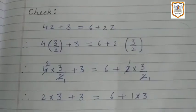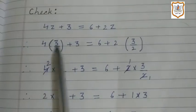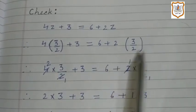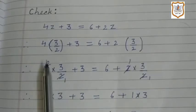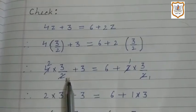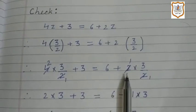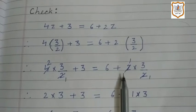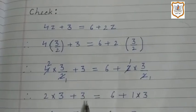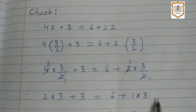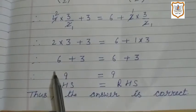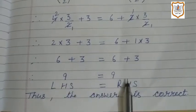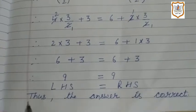Now we check our result by putting z = 3/2. So we write 4(3/2) + 3 = 6 + 2(3/2). Here 4 divided by 2 gives 2, and 2 divided by 2 gives 1. So we write 2 × 3 + 3 = 6 + 1 × 3, which is 6 + 3 = 6 + 3. So 9 = 9. Left hand side equals right hand side, thus the answer is correct.